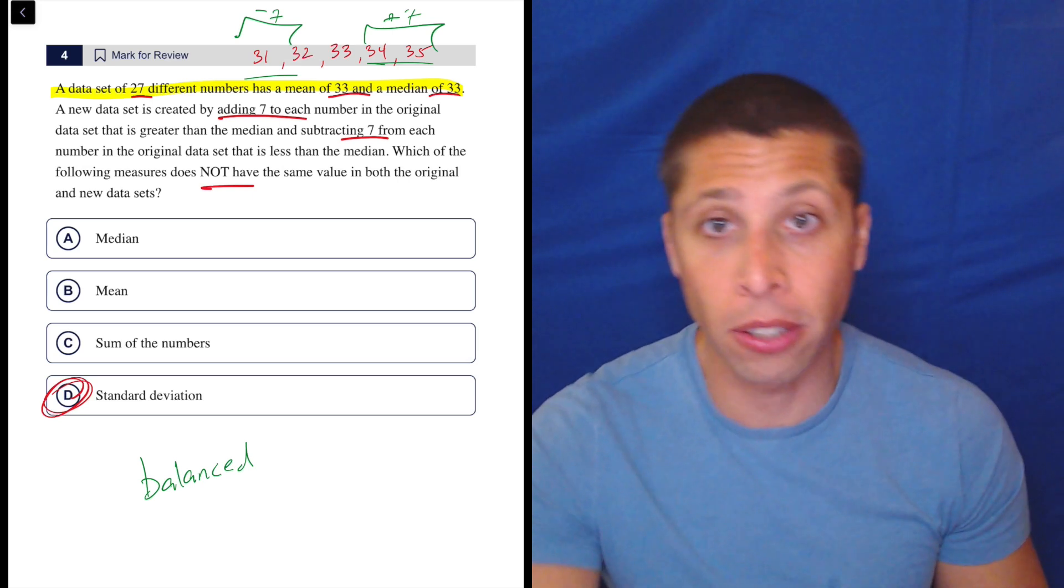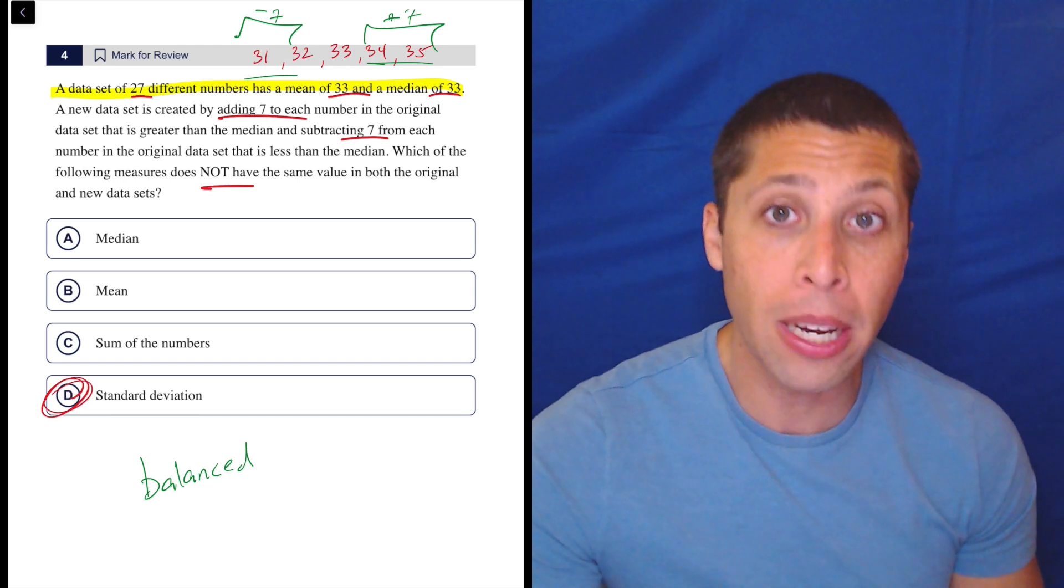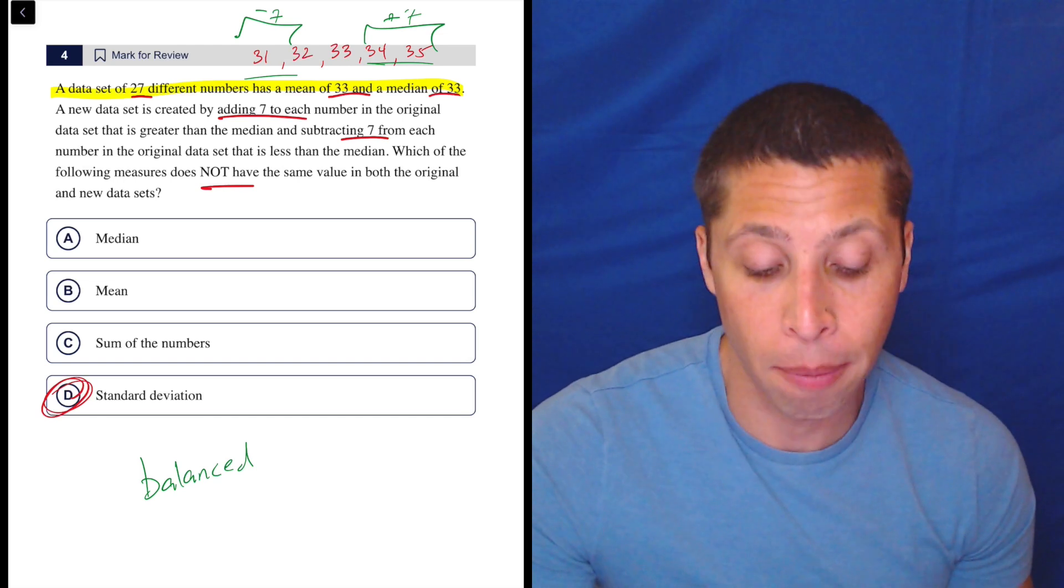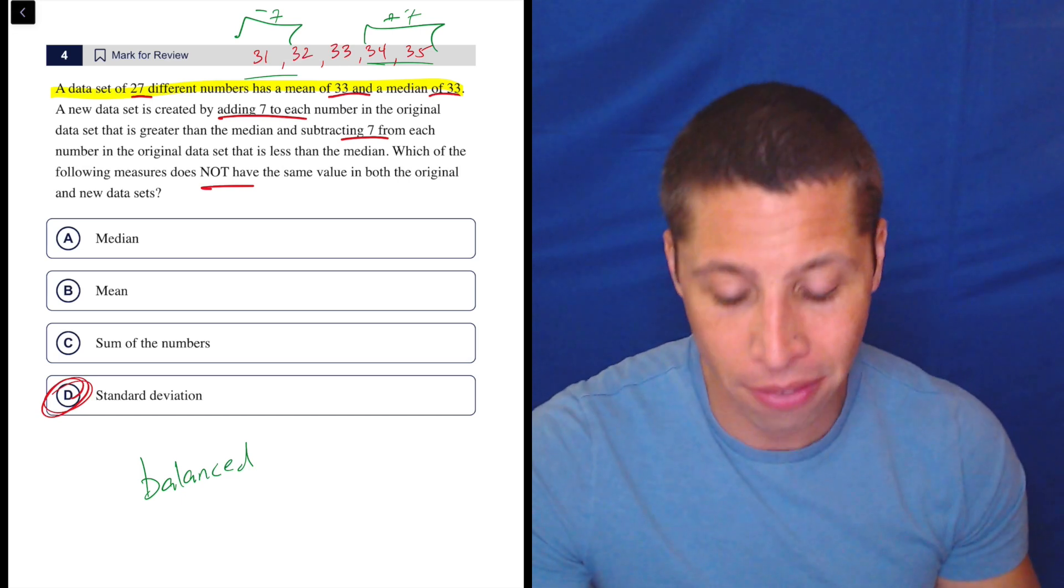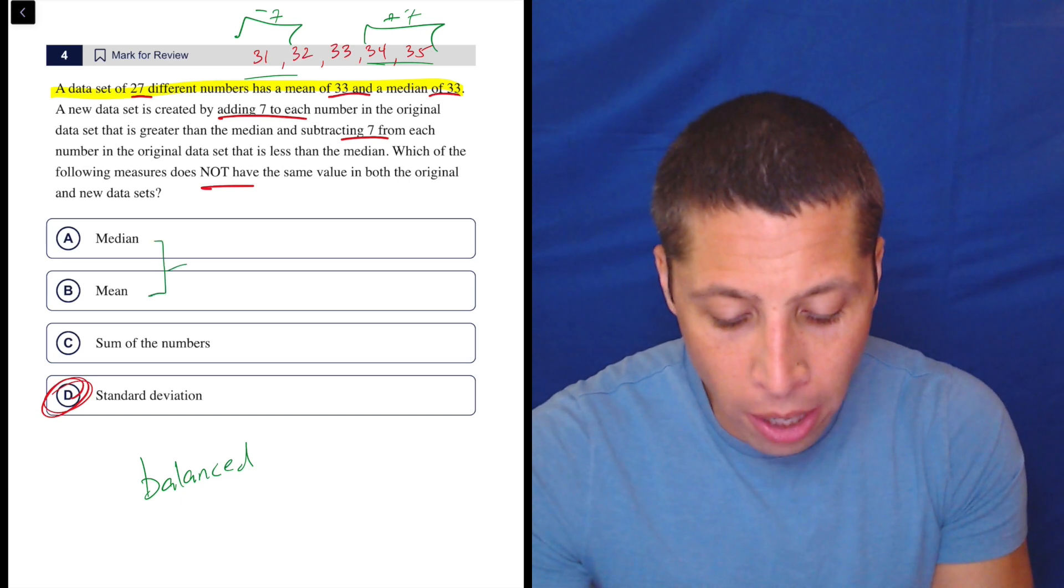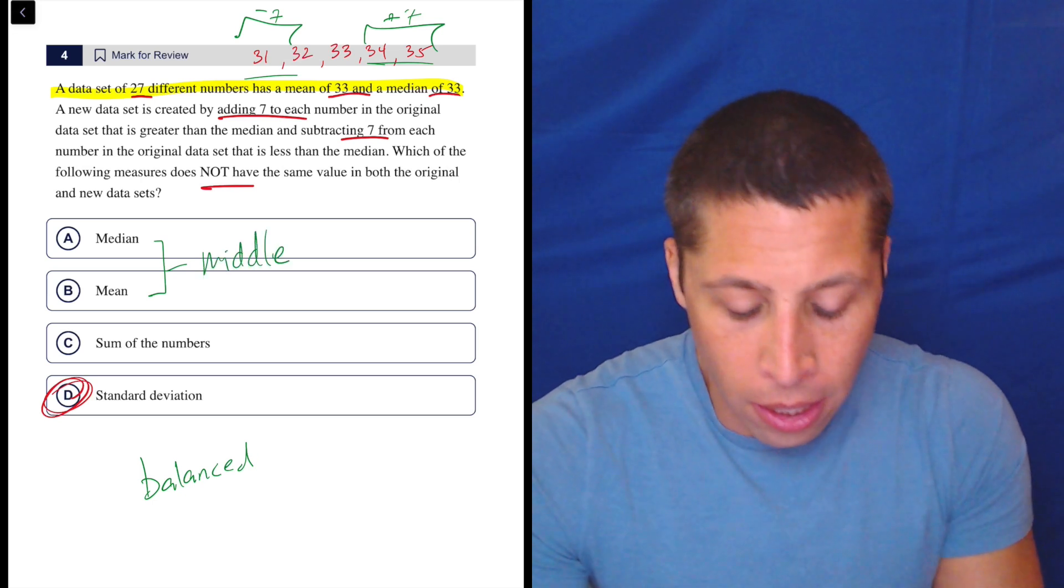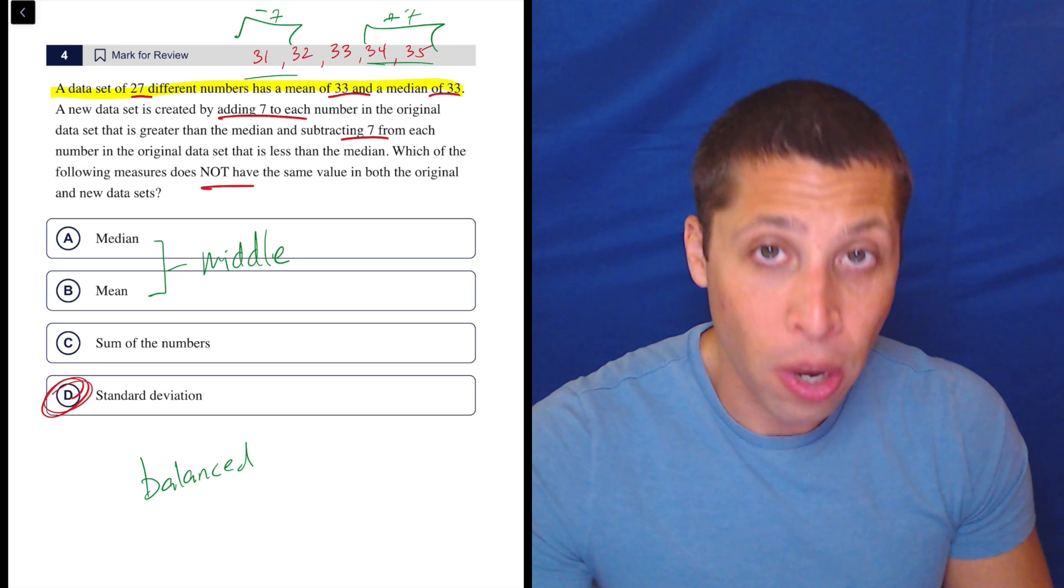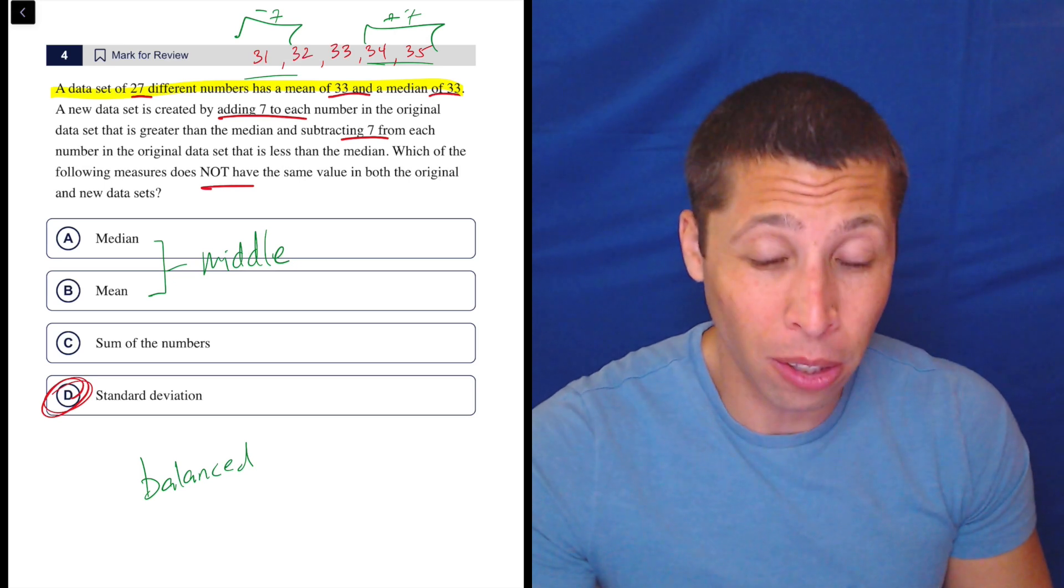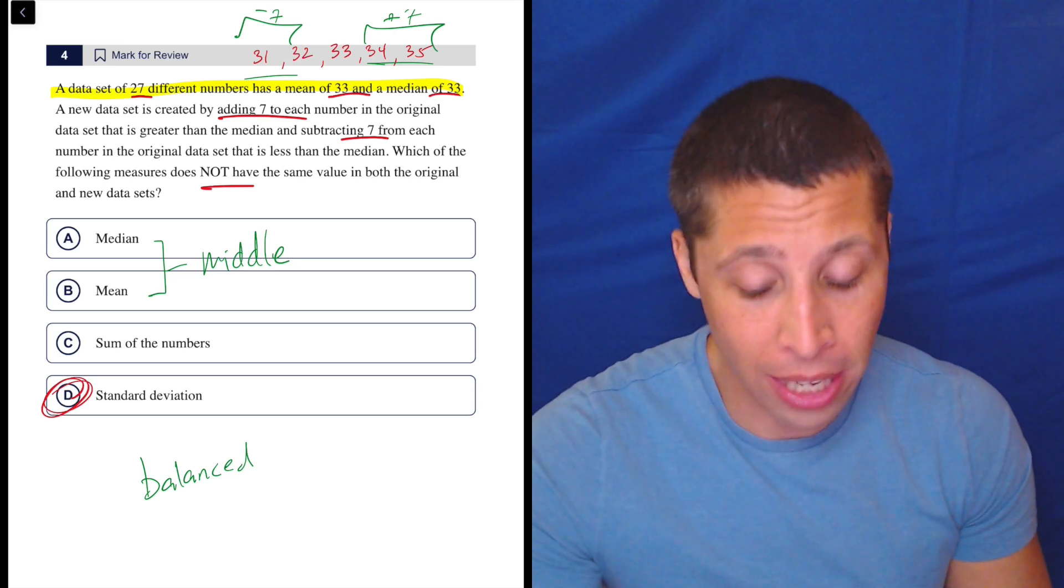So the same, they're going to have the same distance from zero. They'll be slightly off further away from 33, but they'll still be the same distance off. So that would mean that A and B are both wrong. And another way to think about this is A and B are both measures of the middle. So by adding seven and subtracting seven, we're not really changing the middle, we're changing the ends, right? We're changing the other data points.